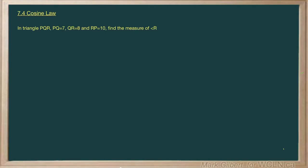In triangle PQR, PQ equals 7, QR equals 8, and RP equals 10. Find the measure of angle R.